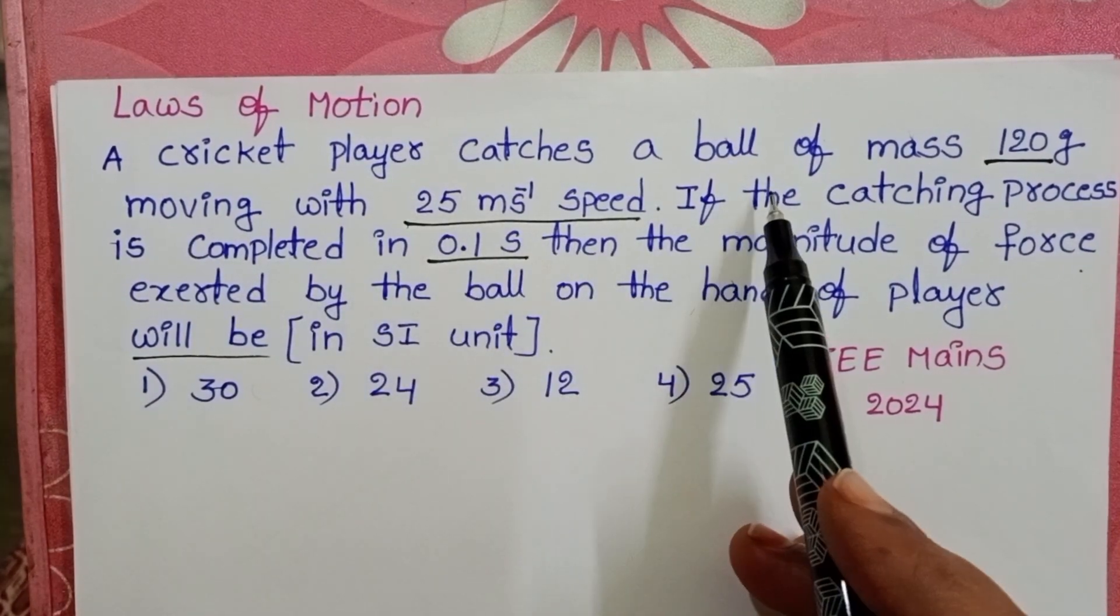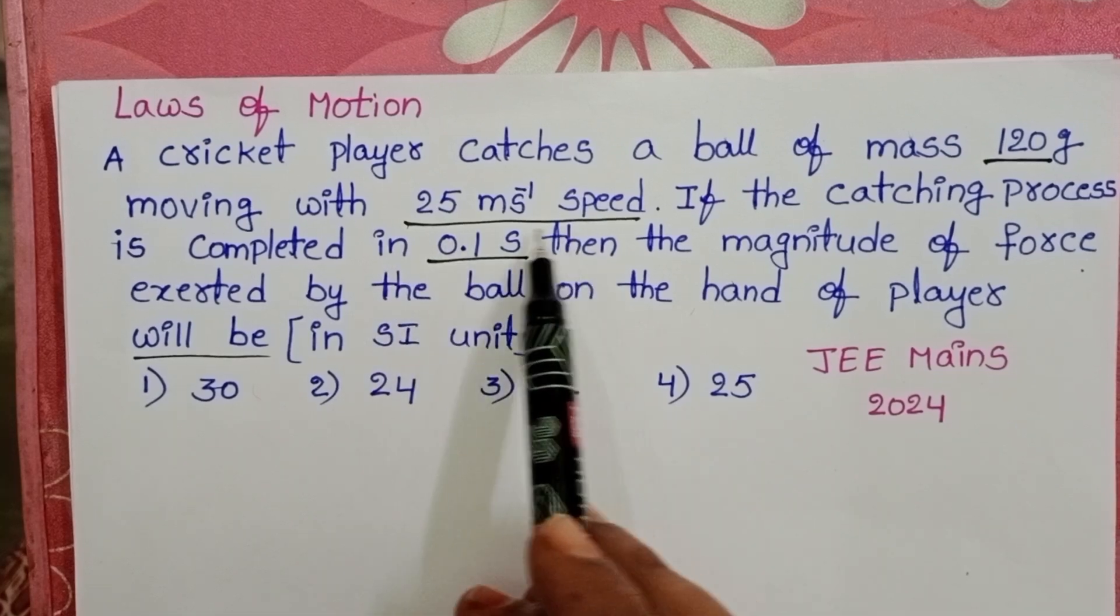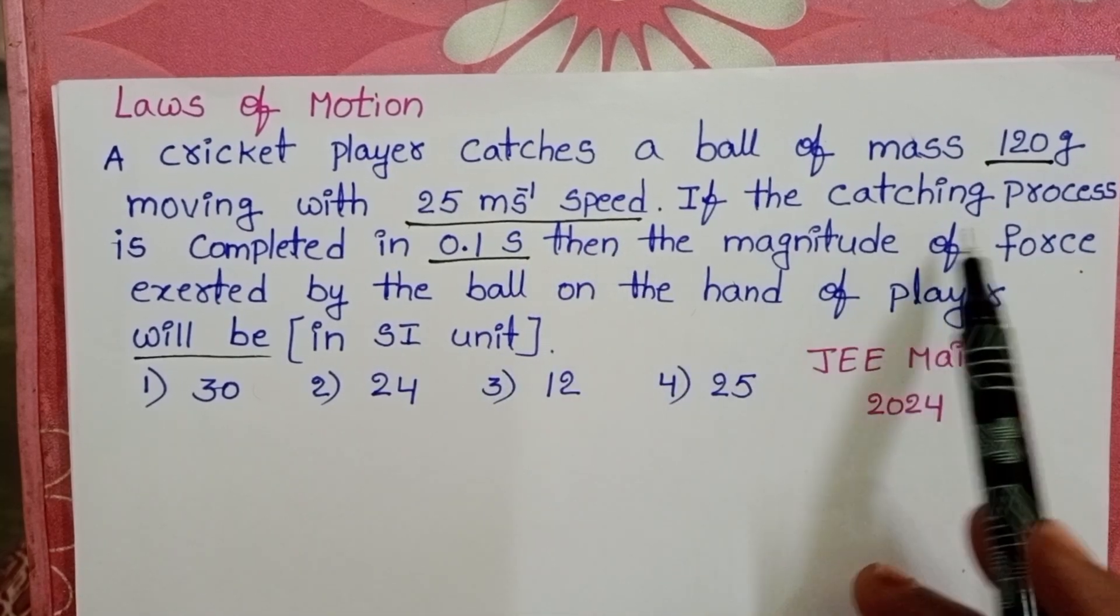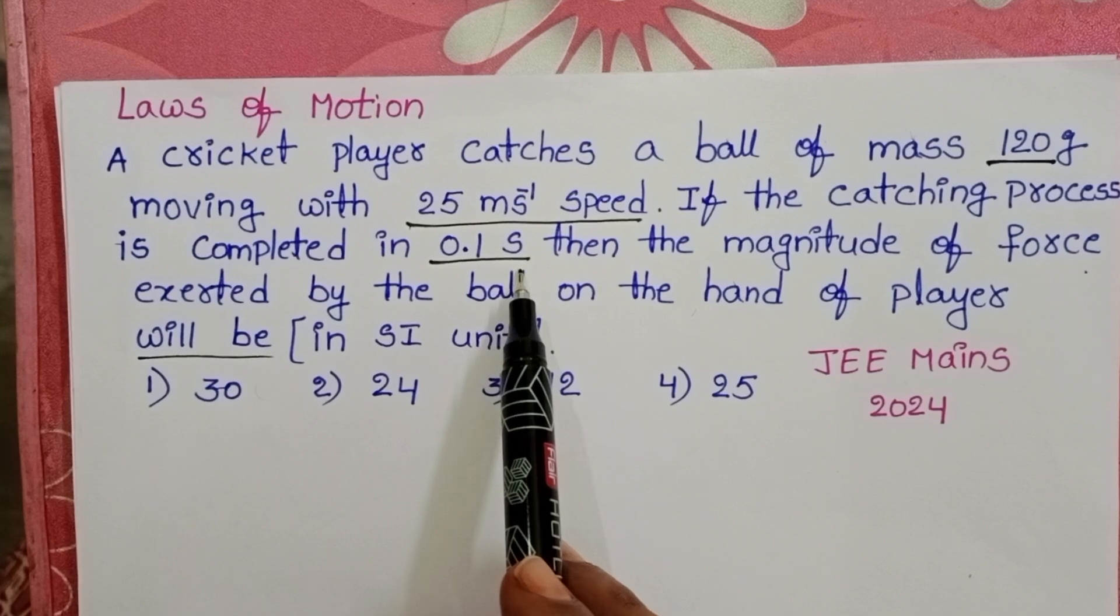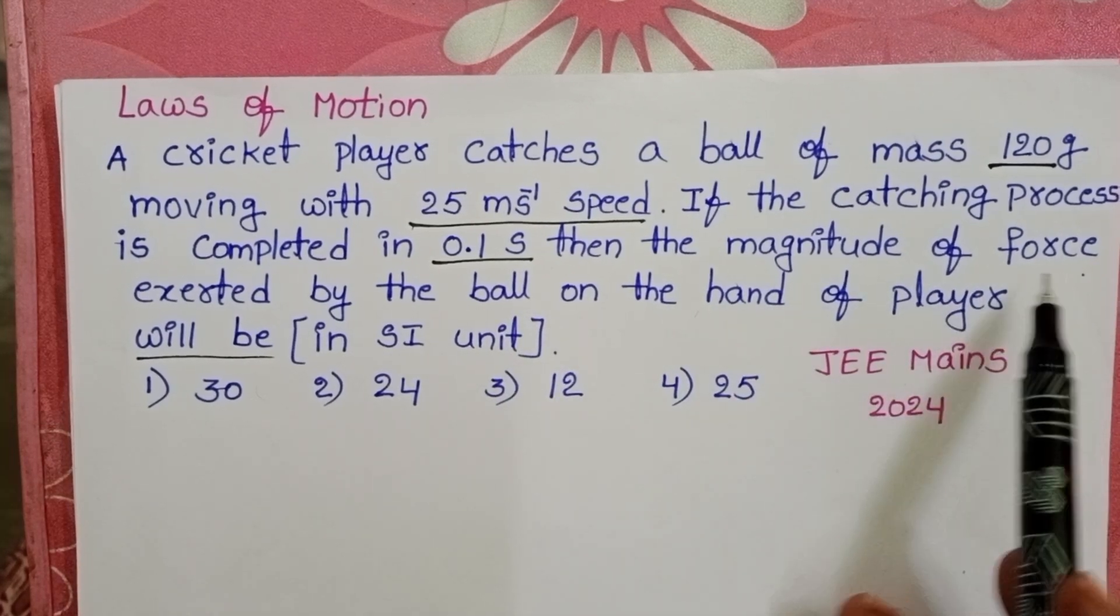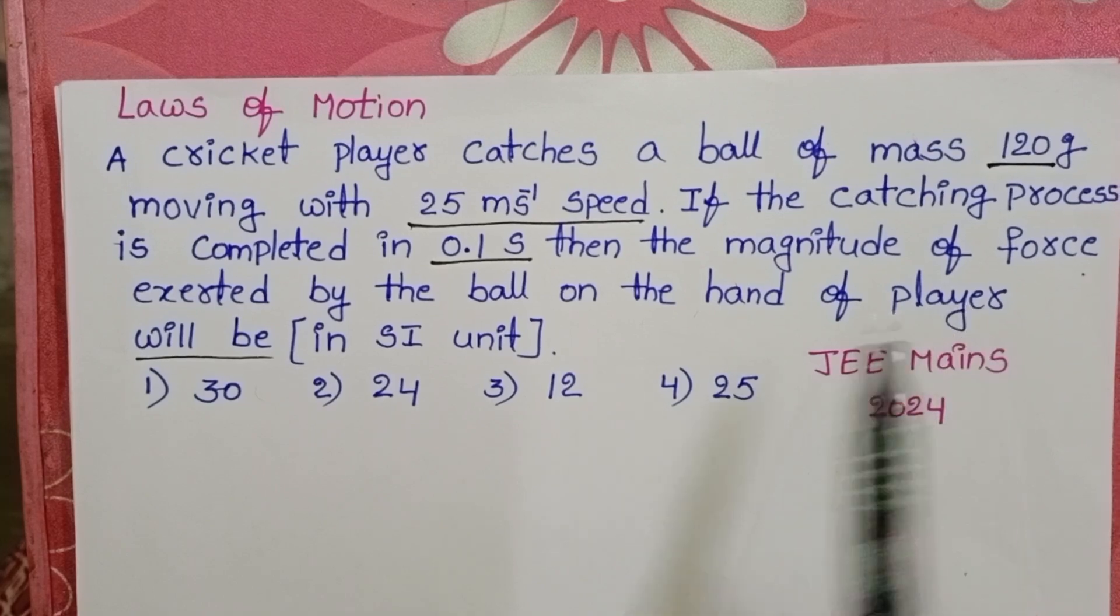A cricket player catches a ball of mass 120 grams, moving with a 25 meter per second speed. If the catching process is completed in 0.1 seconds, then the magnitude of the force exerted by the ball on the hand of the player will be.